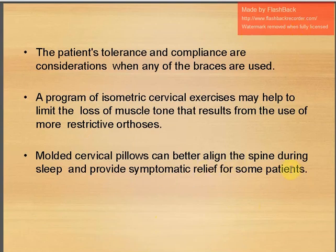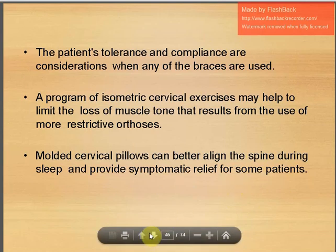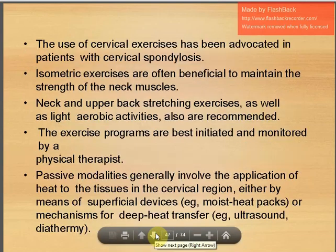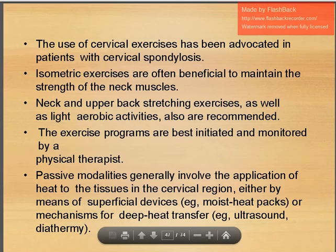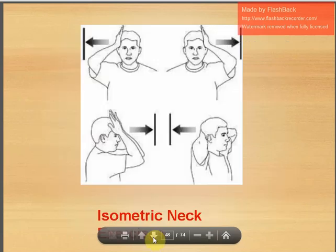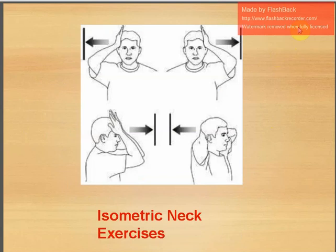Molded cervical pillows can better align the spine during sleep and provide symptomatic relief. Isometric exercises are documented to maintain neck muscle strength; neck and upper back stretching, and light aerobics are also recommended. Exercise programs are best initiated and monitored by a physical therapist. Passive modalities involve application of heat — moist heat packs or shortwave diathermy. Isometric neck exercises are taught to patients.